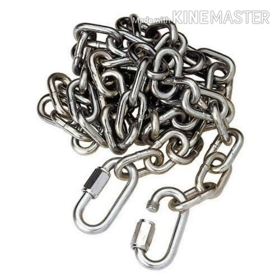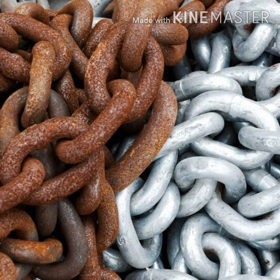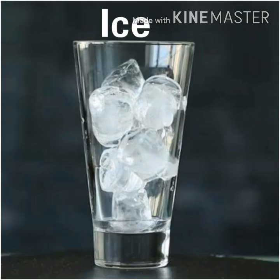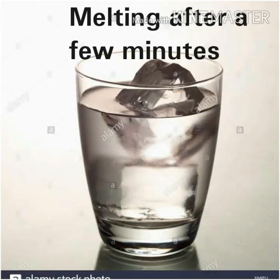The iron object starts to rust if we keep it carelessly for a long time. Look at this chain — this iron chain starts to rust after a few days. Look at this water cycle: the water evaporates, becomes cloud, and again falls back as rain. Look at this glass of ice — it will melt after a few minutes.